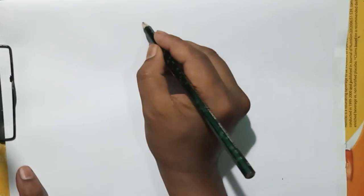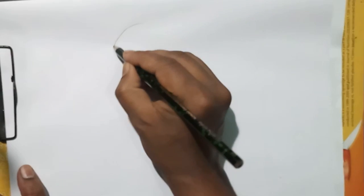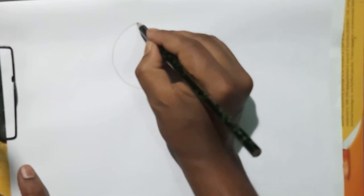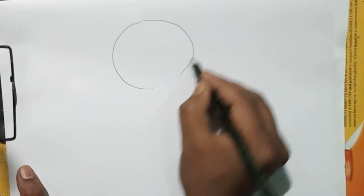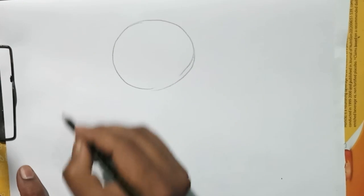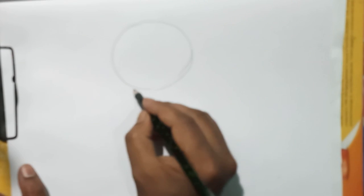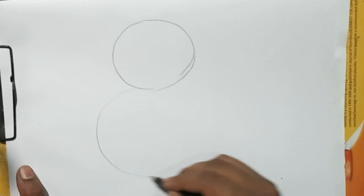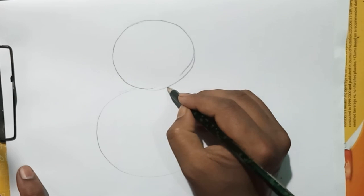At first, I will draw the smaller circle. This one is the smaller. Right below I will draw the bigger circle in this way. Keep connected.